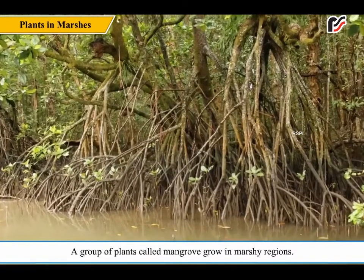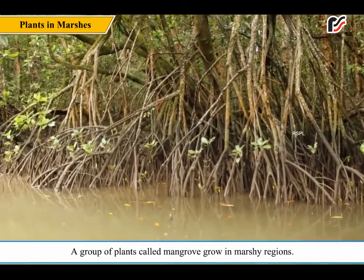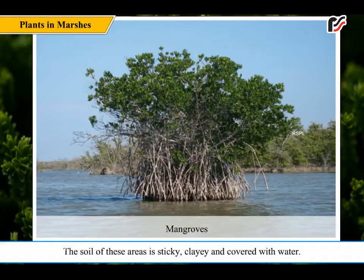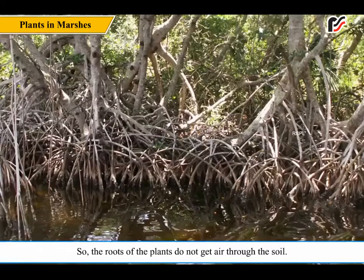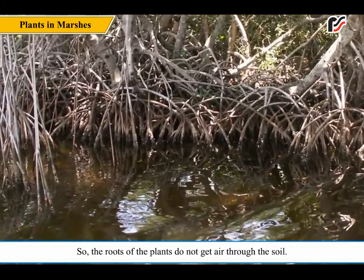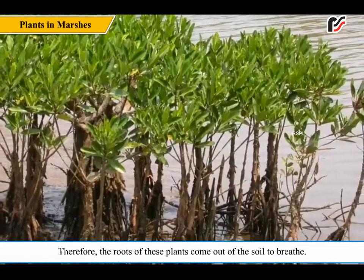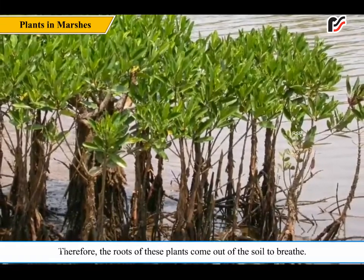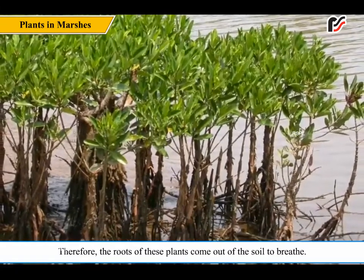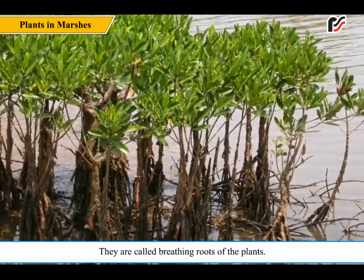A group of plants called mangrove grow in marshy regions. The soil of these areas is sticky, clay, and covered with water. So the roots of the plants do not get air through the soil. Therefore, the roots of these plants come out of the soil to breathe. They are called breathing roots of the plants.